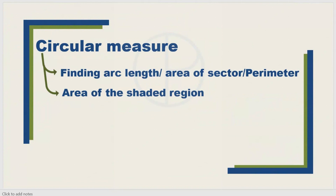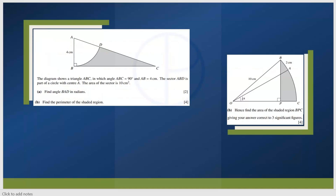Next is circular measure. Under circular measure you will get questions on finding the arc length or area of a sector, or finding the perimeter of the shaded region, or the perimeter of the covered area. Mostly you will get a question on finding the area of the shaded region. For example, in these questions they ask to find the angle, and also find the perimeter of the shaded region.